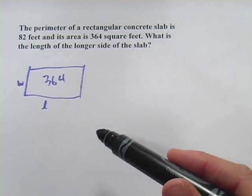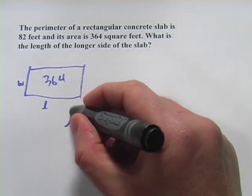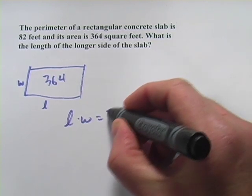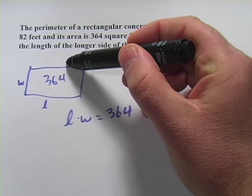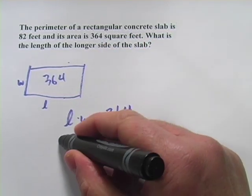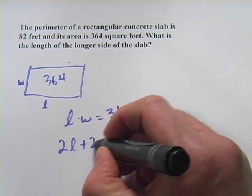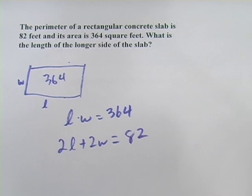Now we're going to start with two equations, one for perimeter and one for area. The area equation is pretty easy. It's just length times width equals 364 and the perimeter you'll remember is 2 times the length plus 2 times the width is going to equal the perimeter. So 2L plus 2W equals, and they said that was 82.